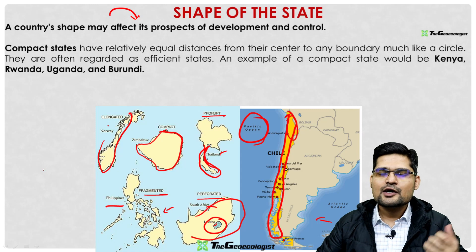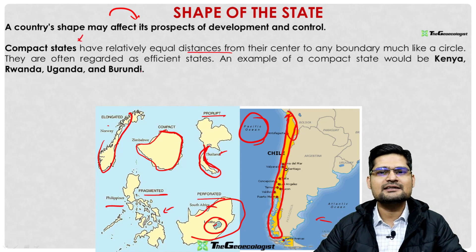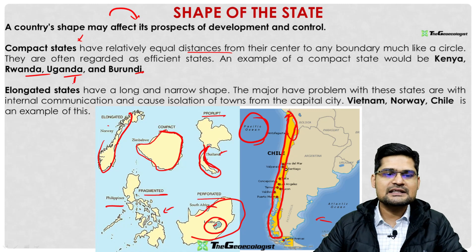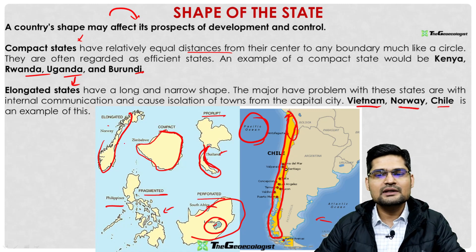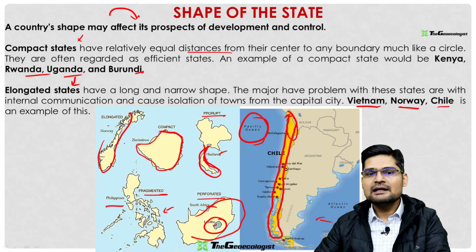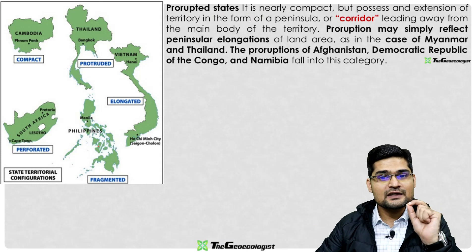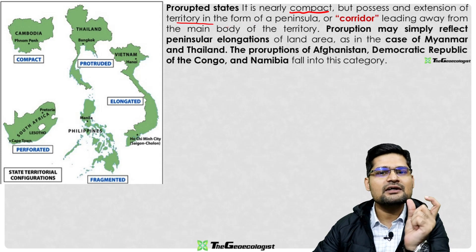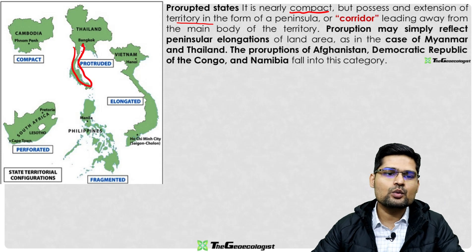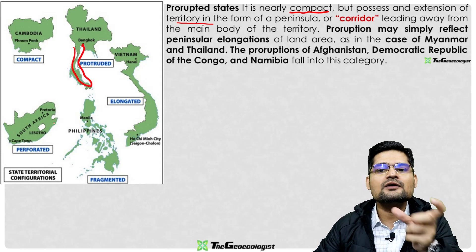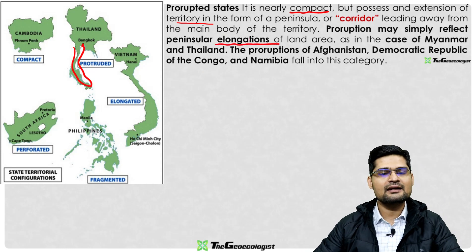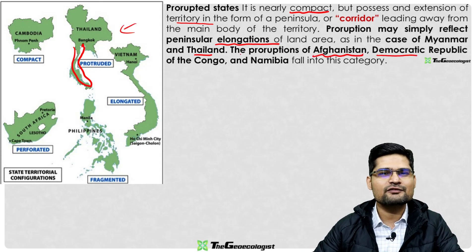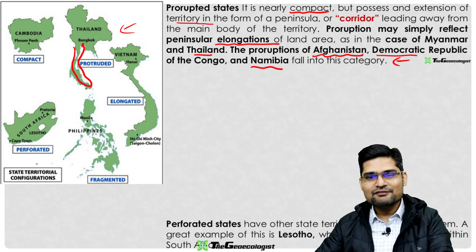Compact states have relatively equal distances from their center to their boundary — Kenya, Rwanda, Uganda, and Burundi are examples. Elongated states like Vietnam, Norway, and Chile are narrow in shape. Prorupted states are nearly compact but possess a territorial extension such as a peninsula — Myanmar, Thailand, Afghanistan, Democratic Republic of Congo, and Namibia fall in this category.